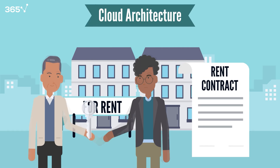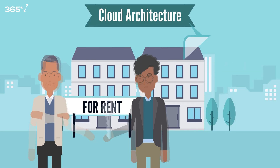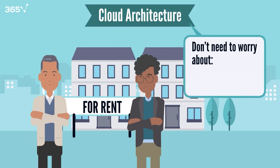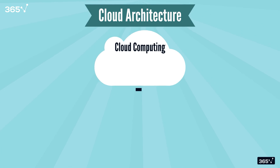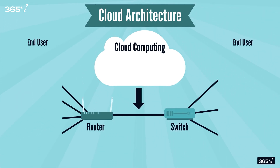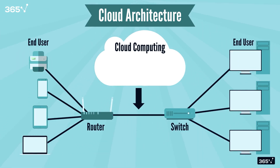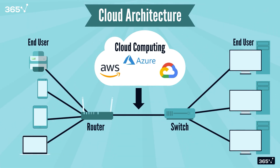Architectures can be built completely on the cloud. Think of it as renting an apartment where you don't have to worry about maintenance or upgrading the building — you only pay rent and fees for whatever services you use. In cloud-based architectures, your data lives in remote servers managed by providers like AWS, Azure, Google Cloud, or Oracle Cloud.